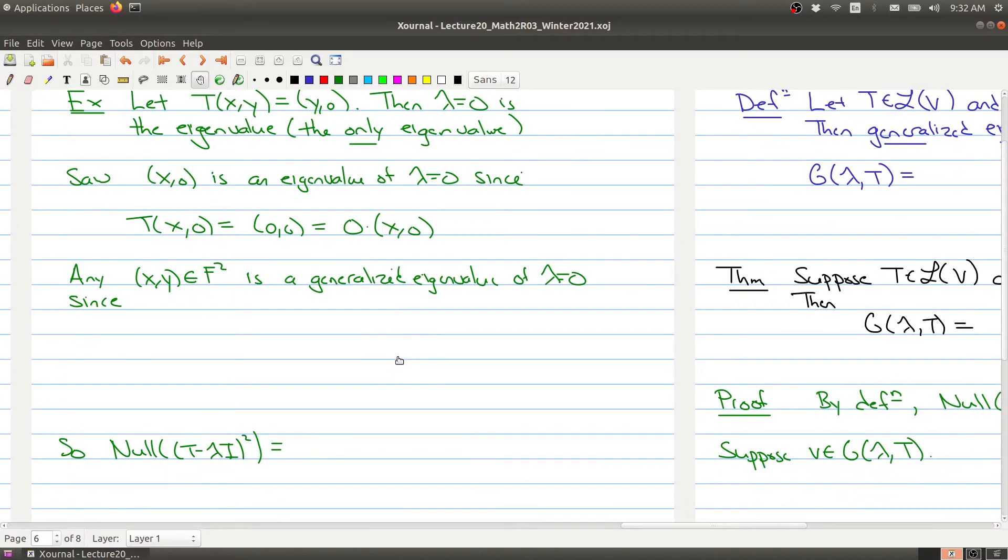On the other hand, any vector inside of our field squared is a generalized eigenvalue of λ equals zero. Since when we plug this vector into (T - 0I)² (x,y), because λ is zero,